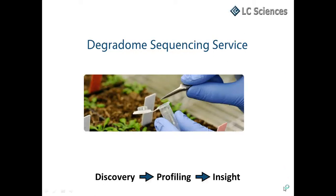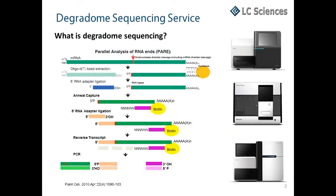LC Science's Degradome Sequencing Service. Degradome sequencing, also referred to as parallel analysis of RNA ends, is a modified 5' rapid amplification of cDNA ends coupled with a high-throughput next-gen sequencing method.